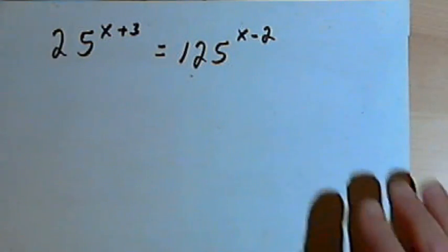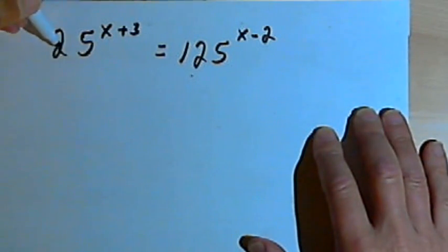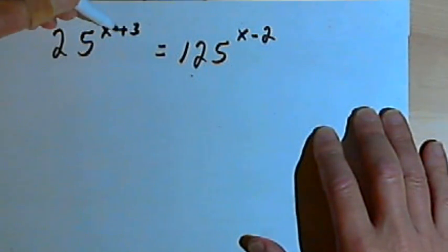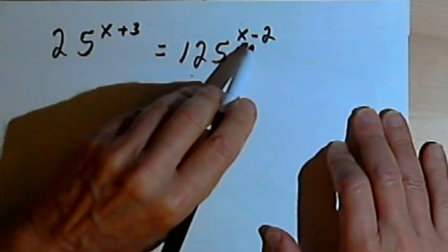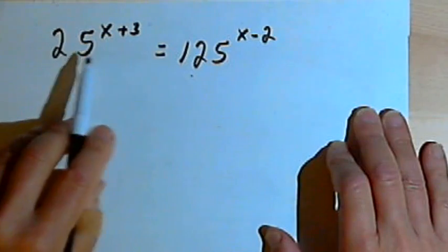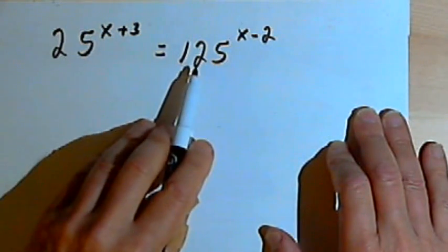Let's look at a few more of these. This one involves a little more work. This is 25 to the x plus 3 equals 125 to the x minus 2. So the first step is going to be to find some kind of common base.